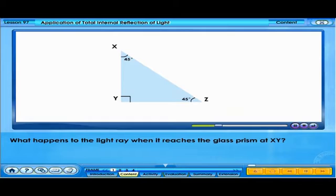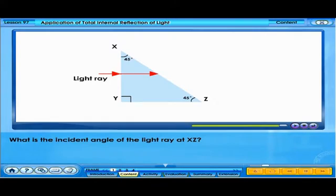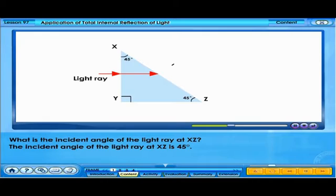What happens to the light ray when it reaches the glass prism at XY? The light ray is not refracted. It enters the glass prism at XY following a straight path. What is the incident angle of the light ray at XZ? The incident angle of the light ray at XZ is 45 degrees.